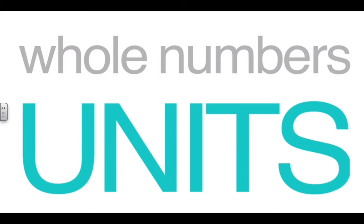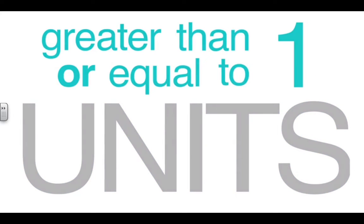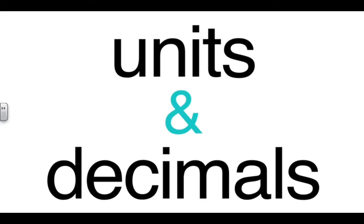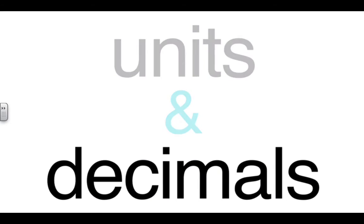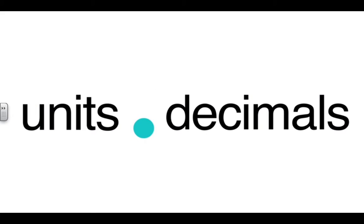Whole numbers, also called units, are greater than or equal to one. The decimal point basically signifies and as a way to separate these two different kinds of numbers. Decimals are found to the right of the decimal point, and units are found to the left.